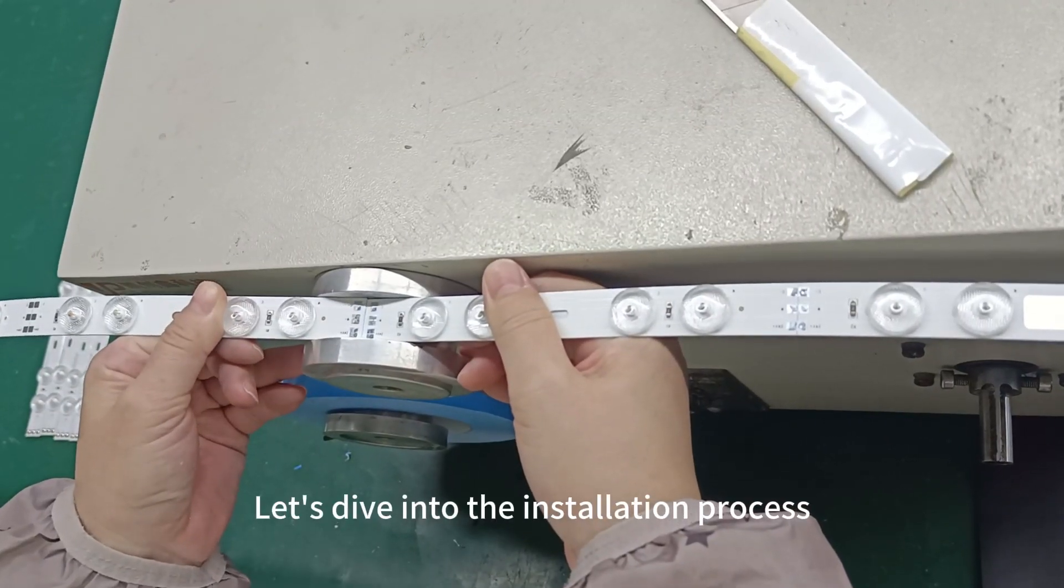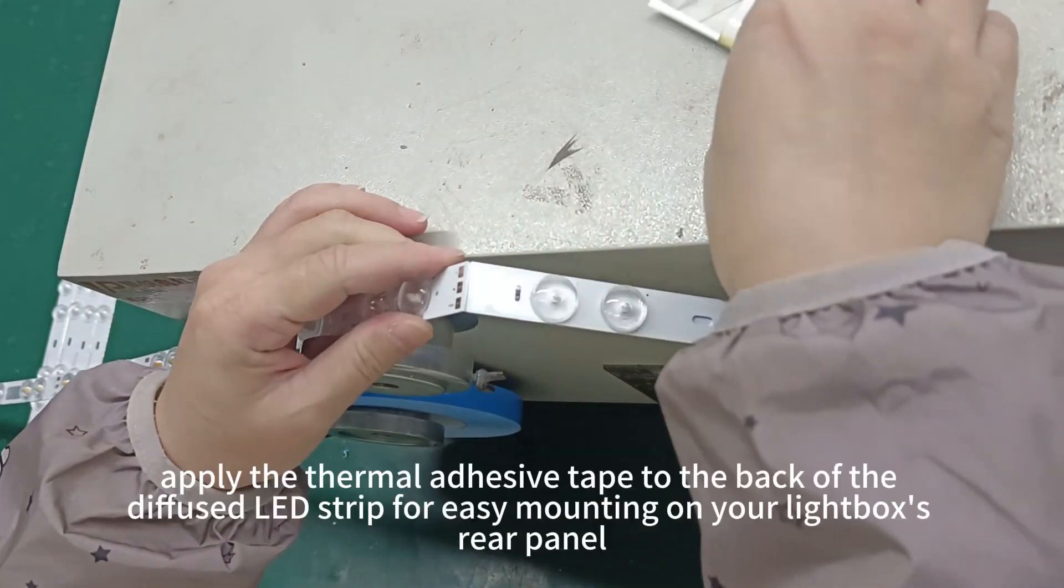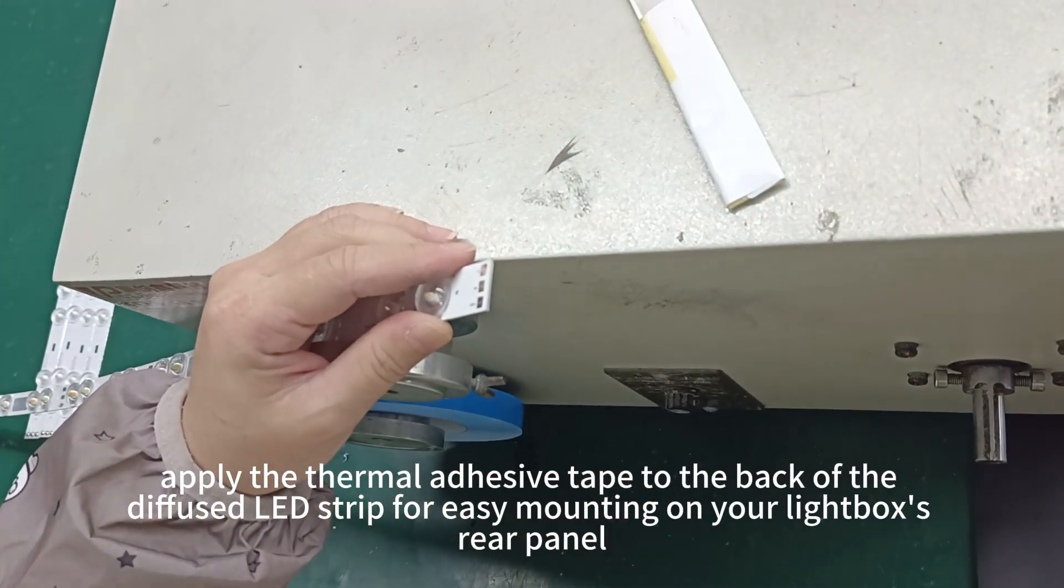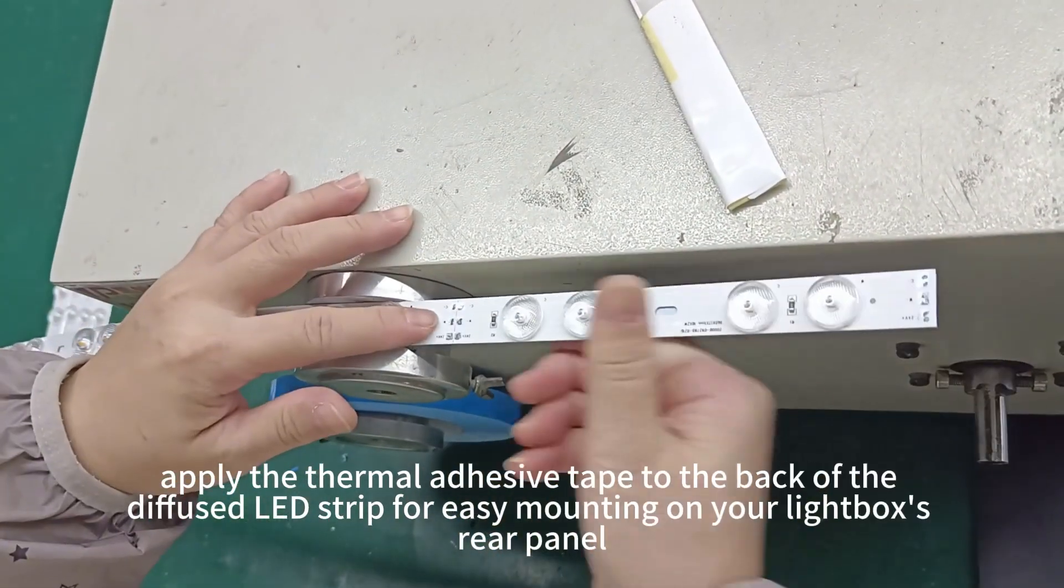Let's dive into the installation process. First, apply the thermal adhesive tape to the back of the diffused LED strip for easy mounting on your lightbox's rear panel.